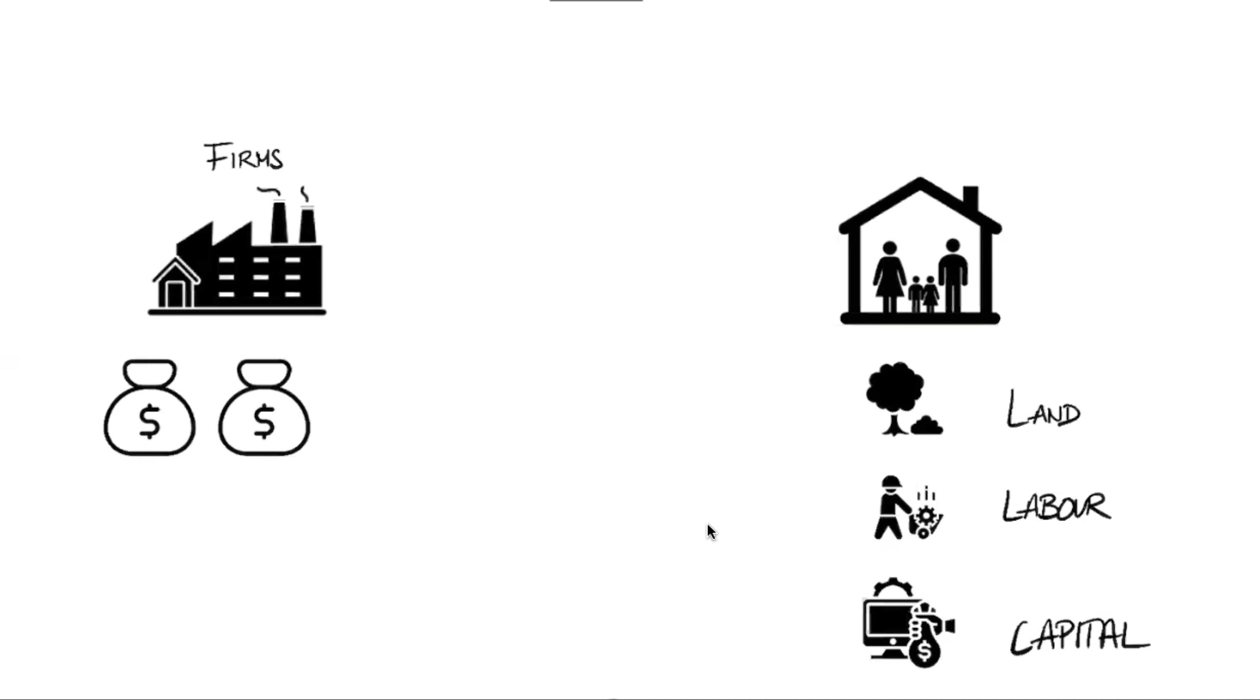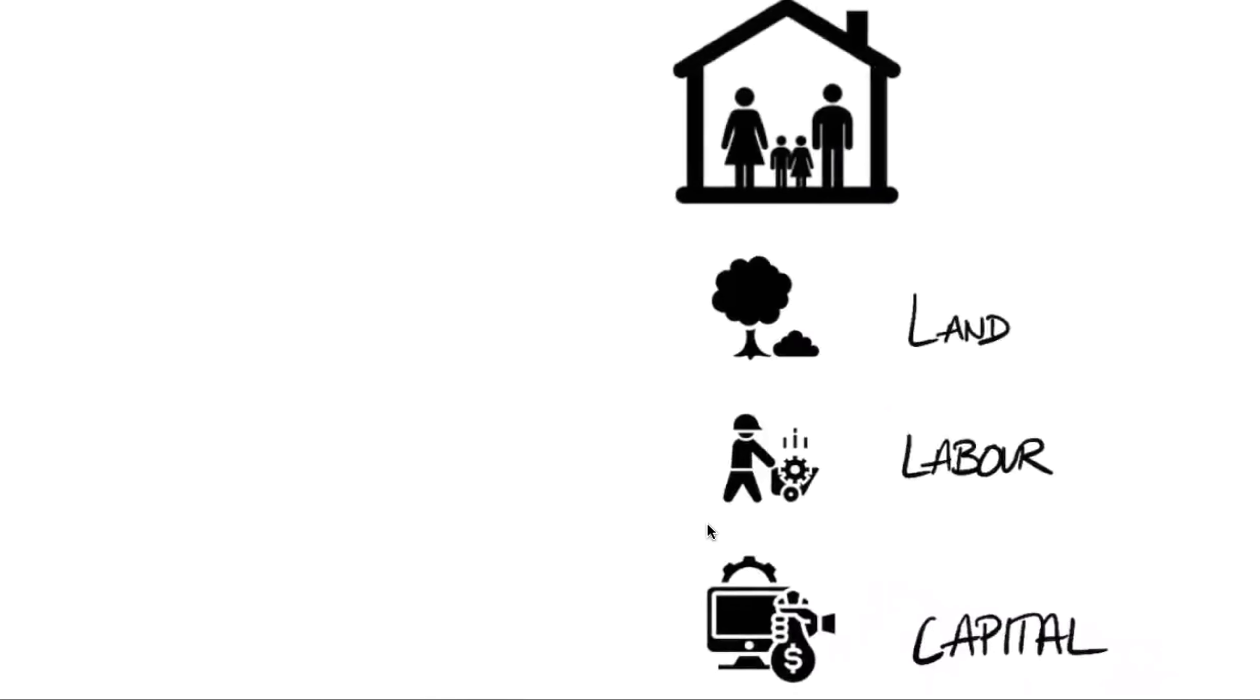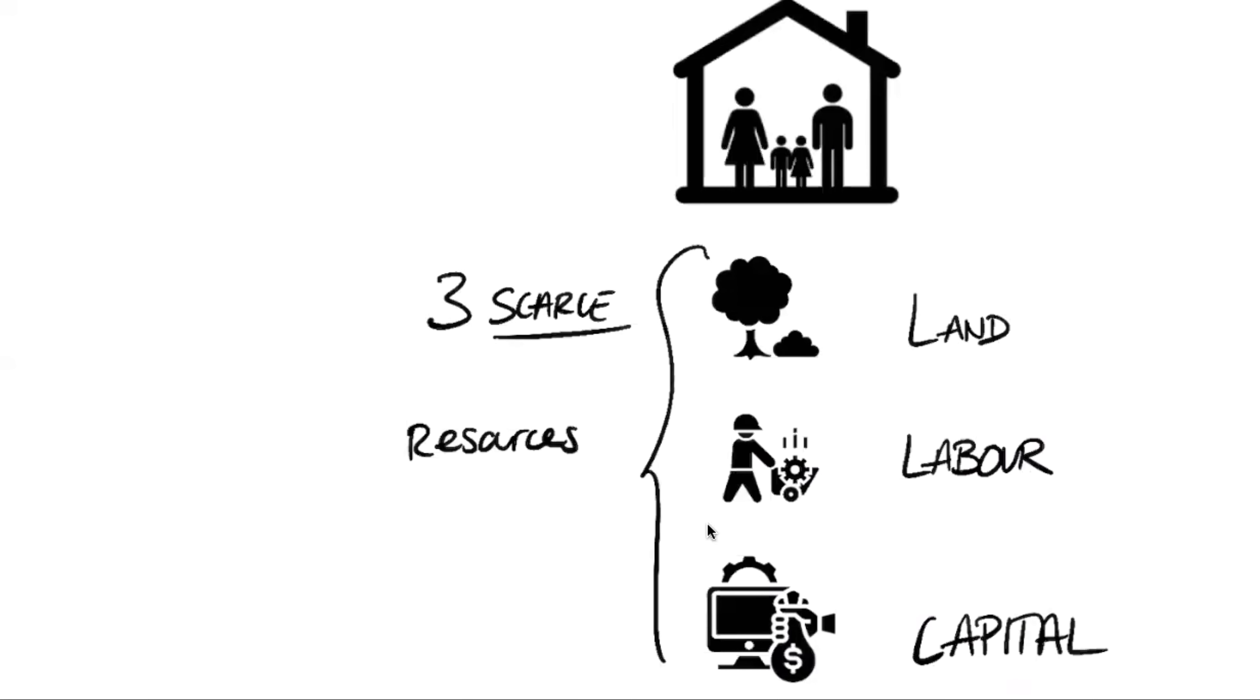Let's first have a look at the household. As you see here, the household have three scarce resources. They possess three scarce resources. Now what is a scarce resource? It is a resource that is limited and wanted or needed.